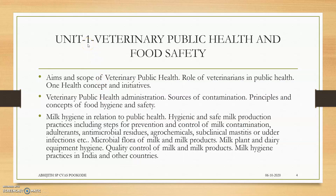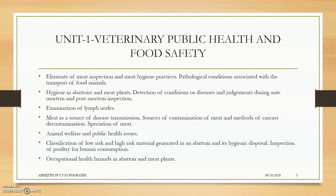Unit 1 is Veterinary Public Health and Food Safety. This is a larger unit covering topics on public health scope, role of veterinarians in public health, one health concepts and initiatives, milk hygiene, and meat hygiene topics, as well as animal welfare and public health issues.